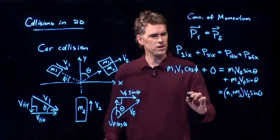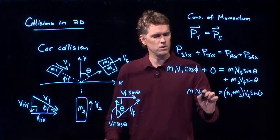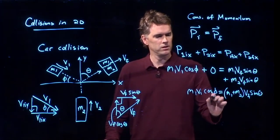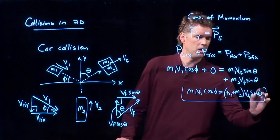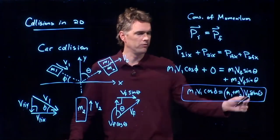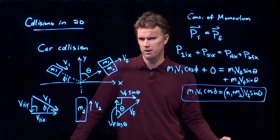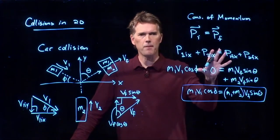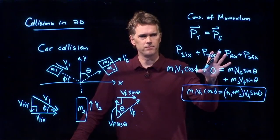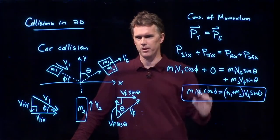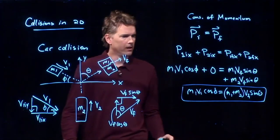So on this right here, I want v final sine theta. And then we have to add p2, but that's just M2 v final sine theta. And so on this right side, we can combine the two, which makes sense. They're stuck together. So let's rewrite this equation. M1 v1 cosine phi equals (M1 plus M2) v final sine theta.